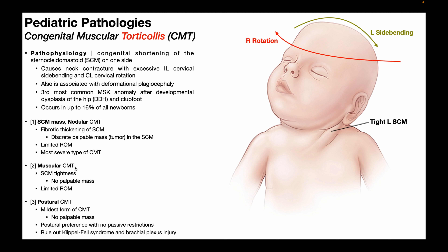The second type of CMT is muscular CMT. This is where there's literally just tightness of the sternocleidomastoid with no palpable mass — that's what differentiates it from the first type. There's no tumor, just muscle tightness, and again there will be limited range of motion away from the resting position, just as described with nodular CMT.